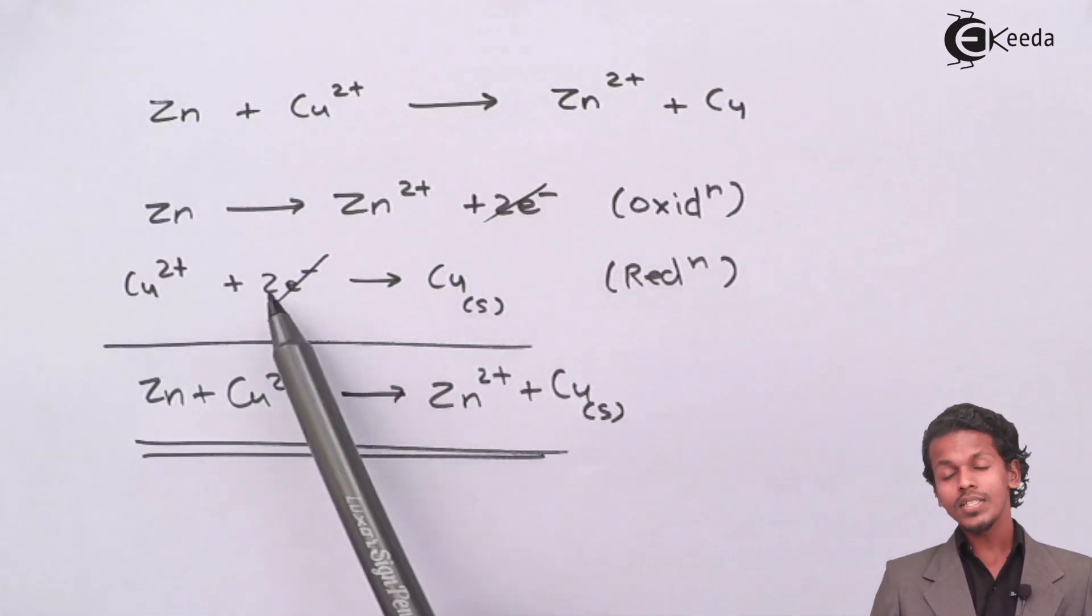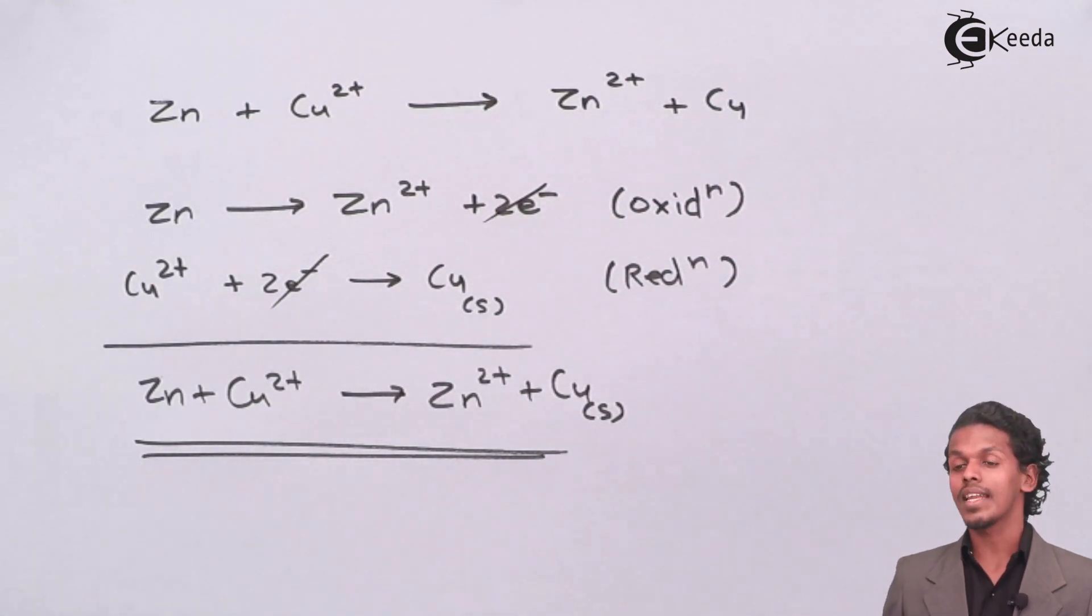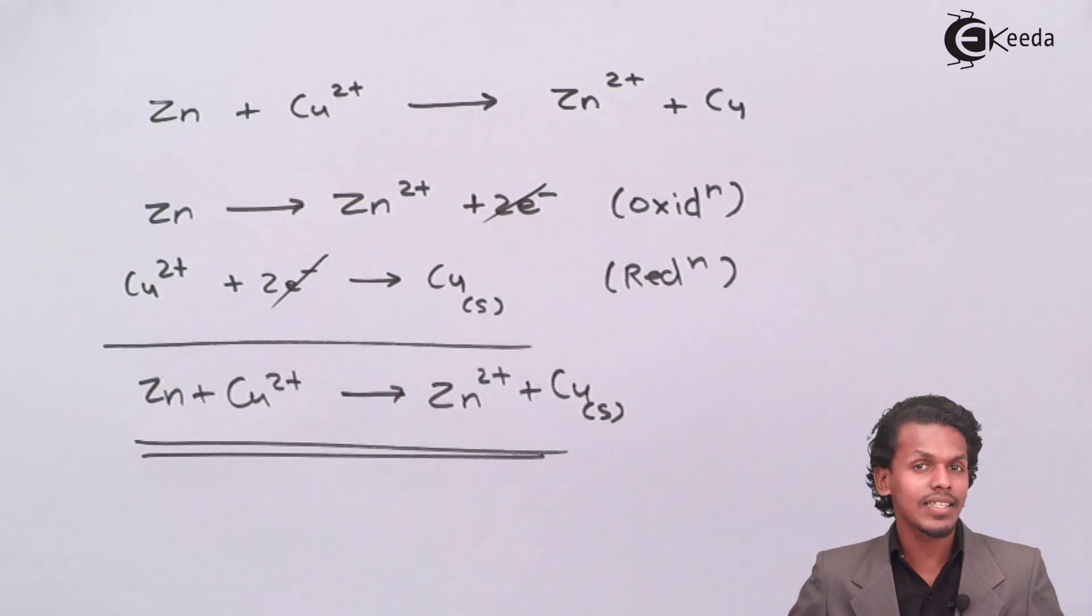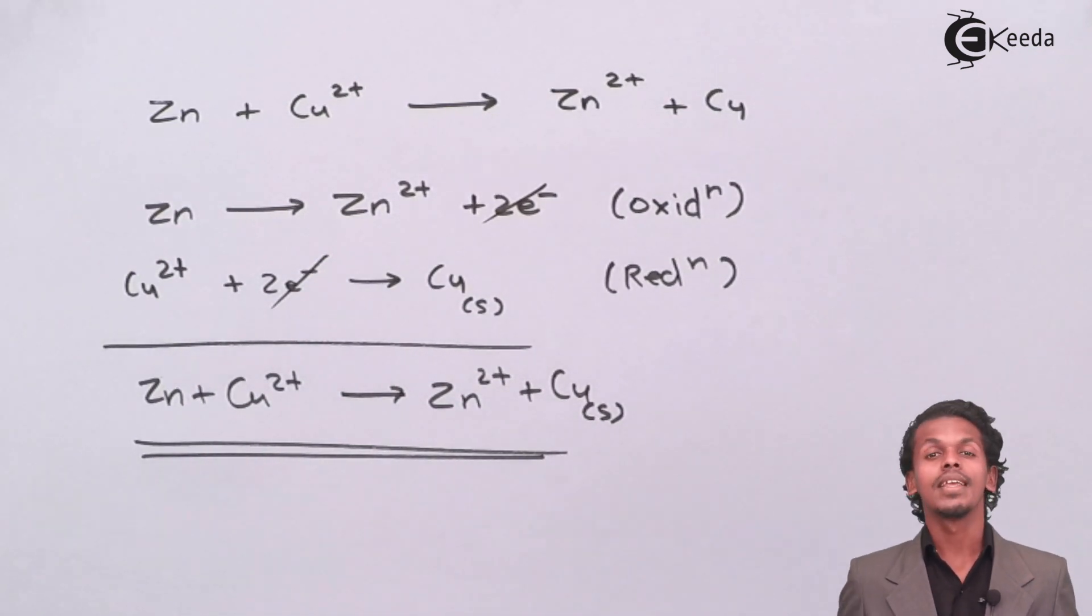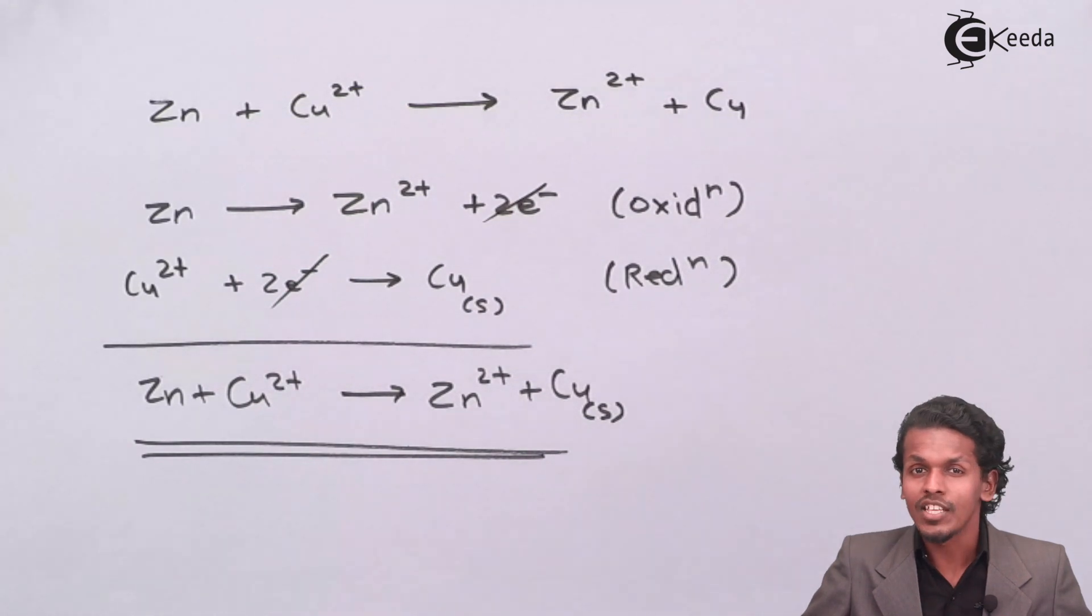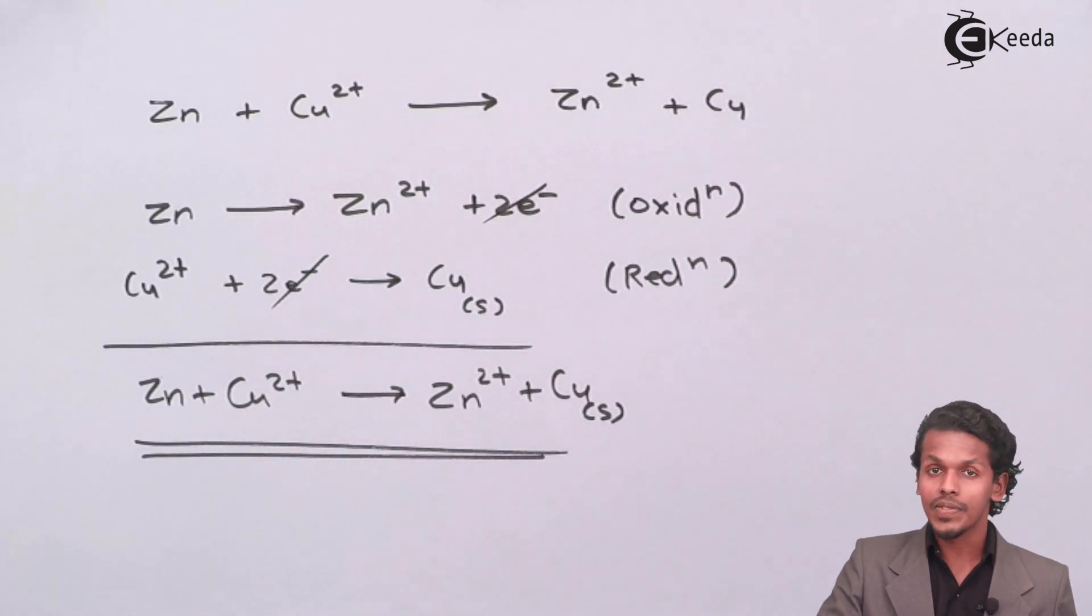In this case, electrons are involved and hence electricity can be generated. The equation I have mentioned is for a Daniel cell. As you know, the Daniel cell is a cell in which electricity is produced.